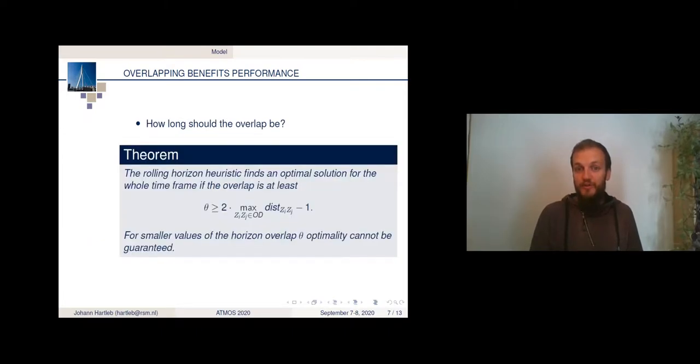But of course, the question is, how long should the overlap be? So the shorter it is, the less information we share, the less knowledge we have from the previous horizon. And the longer it is, the more information we have, but the more complicated it is to solve it. And in the paper, we provide you with a theorem and a proof of that, that we can find a globally optimal solution for the whole timeframe if the overlap is at least two times the maximum distance between two zones in terms of time intervals minus one.